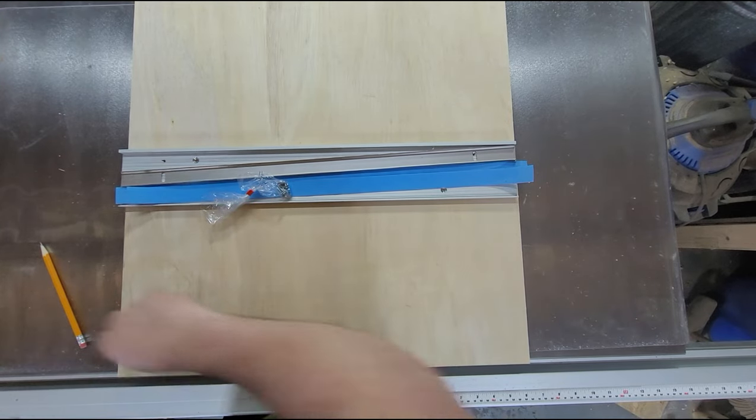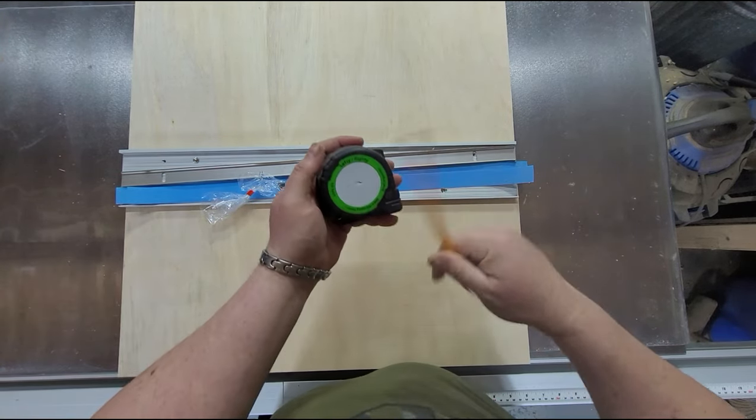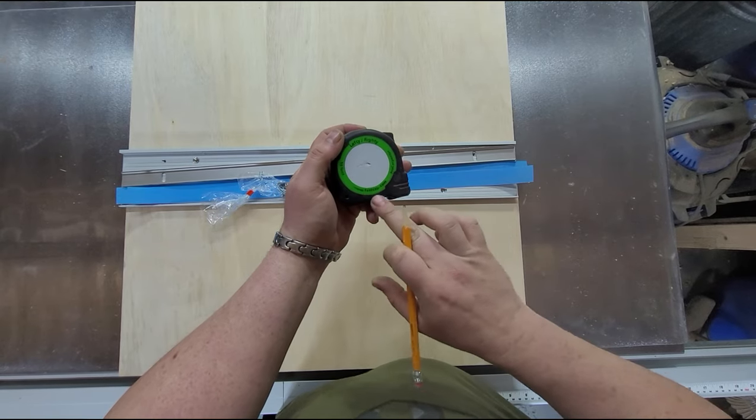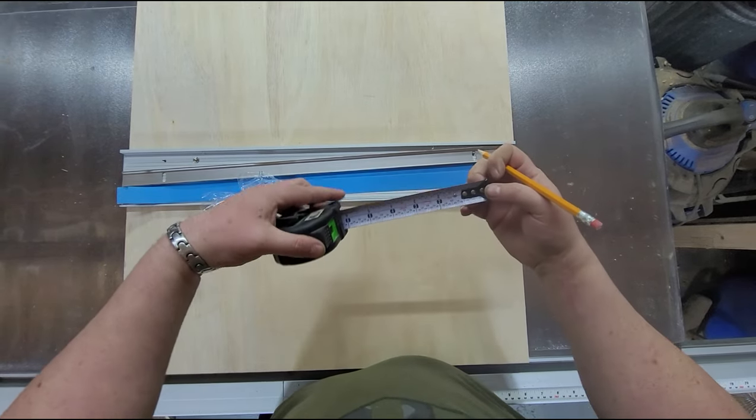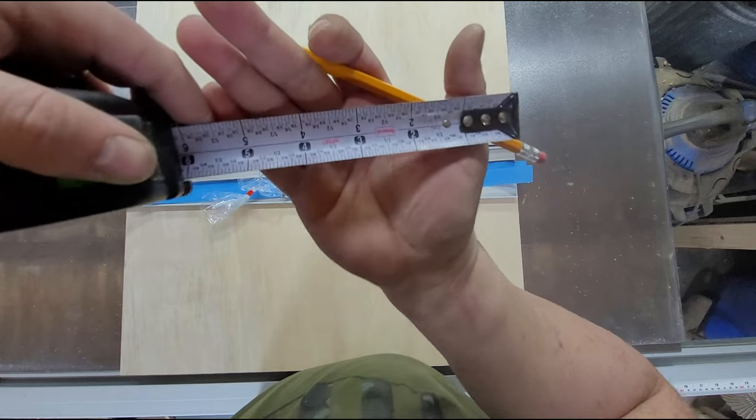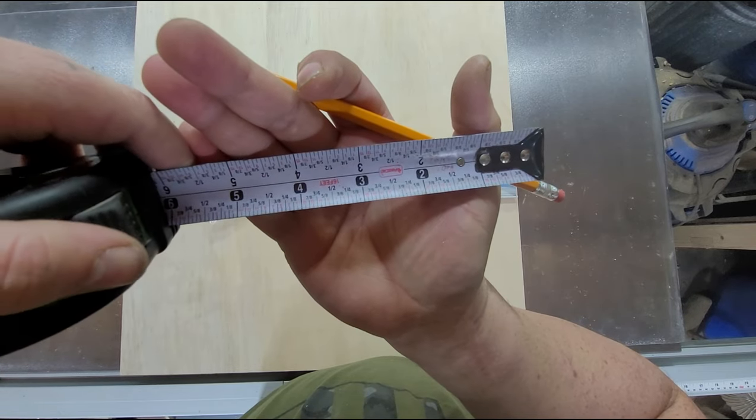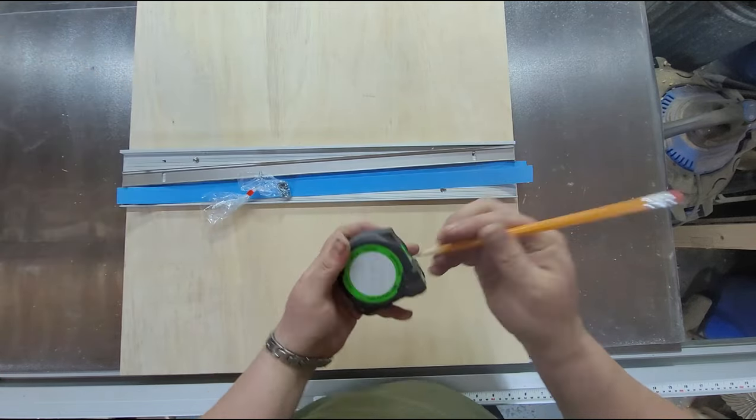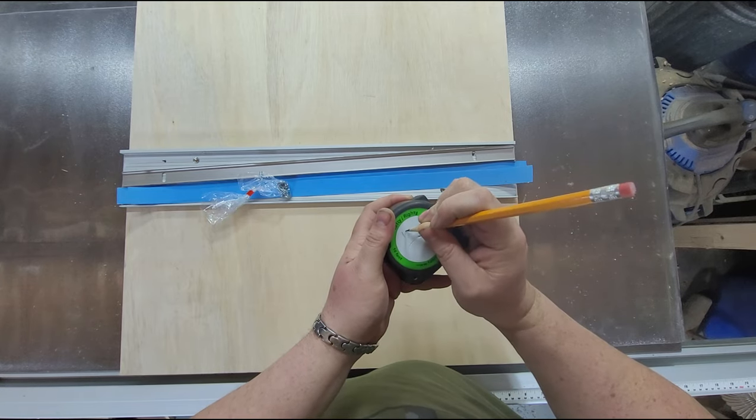So that is ten inches. So the first piece I'm going to cut, if you guys don't have one of these, I recommend it. It's a Fast Cap tape measure. It also has all the fractions and all the sixteenths numbers in there and stuff like that. Plus you can write on it. So the first cut I'm going to do is ten inches.